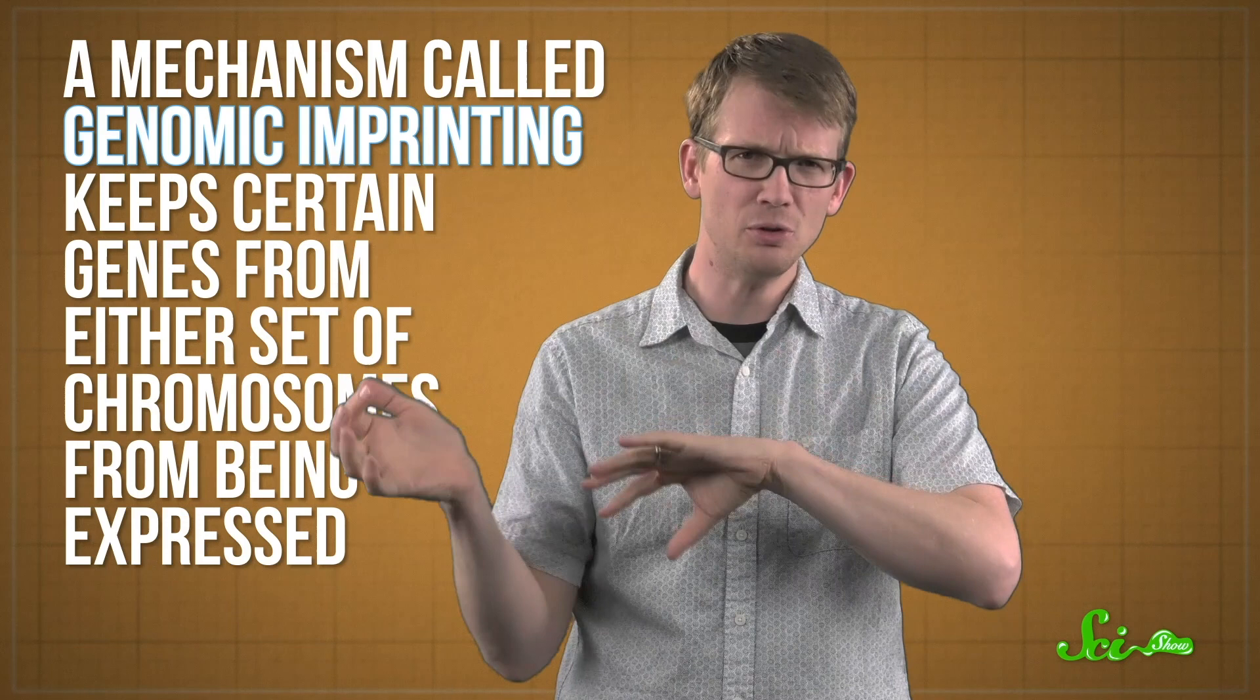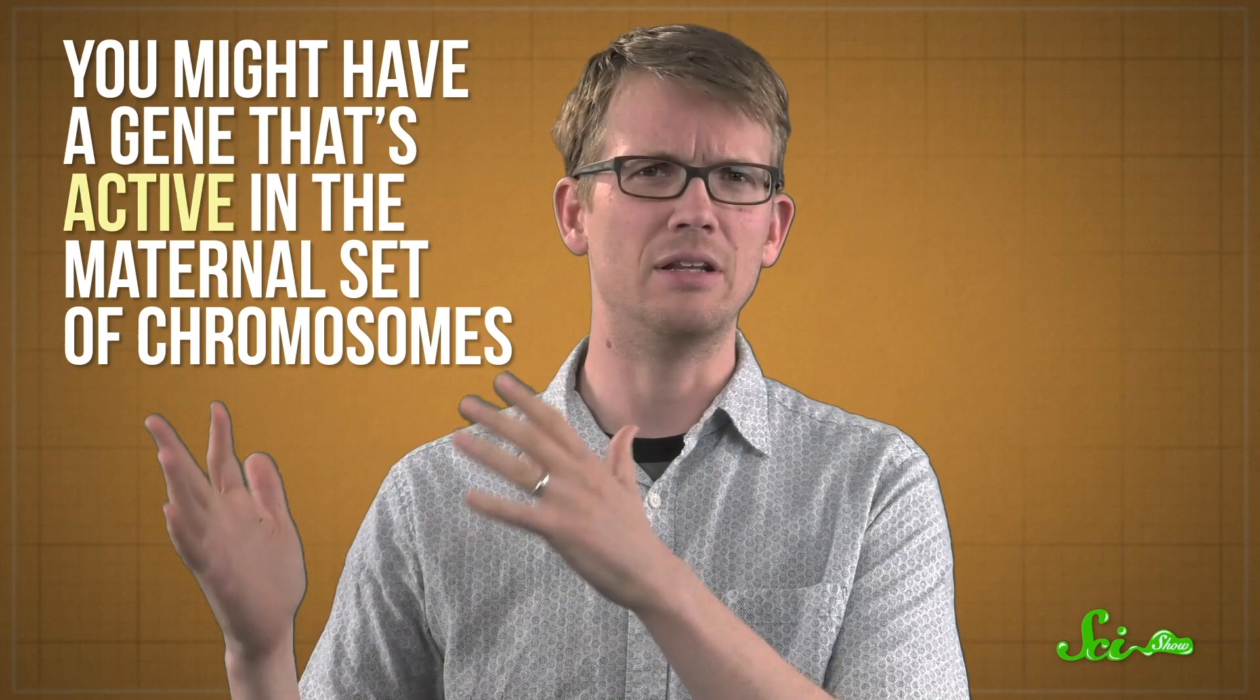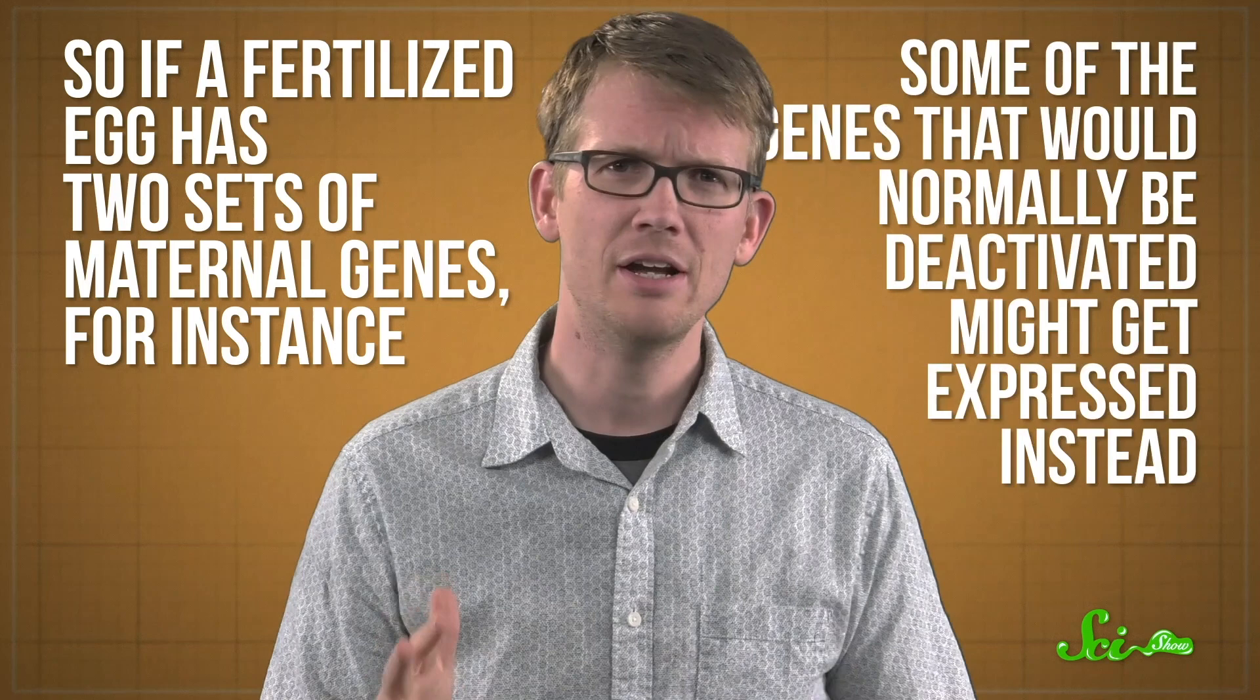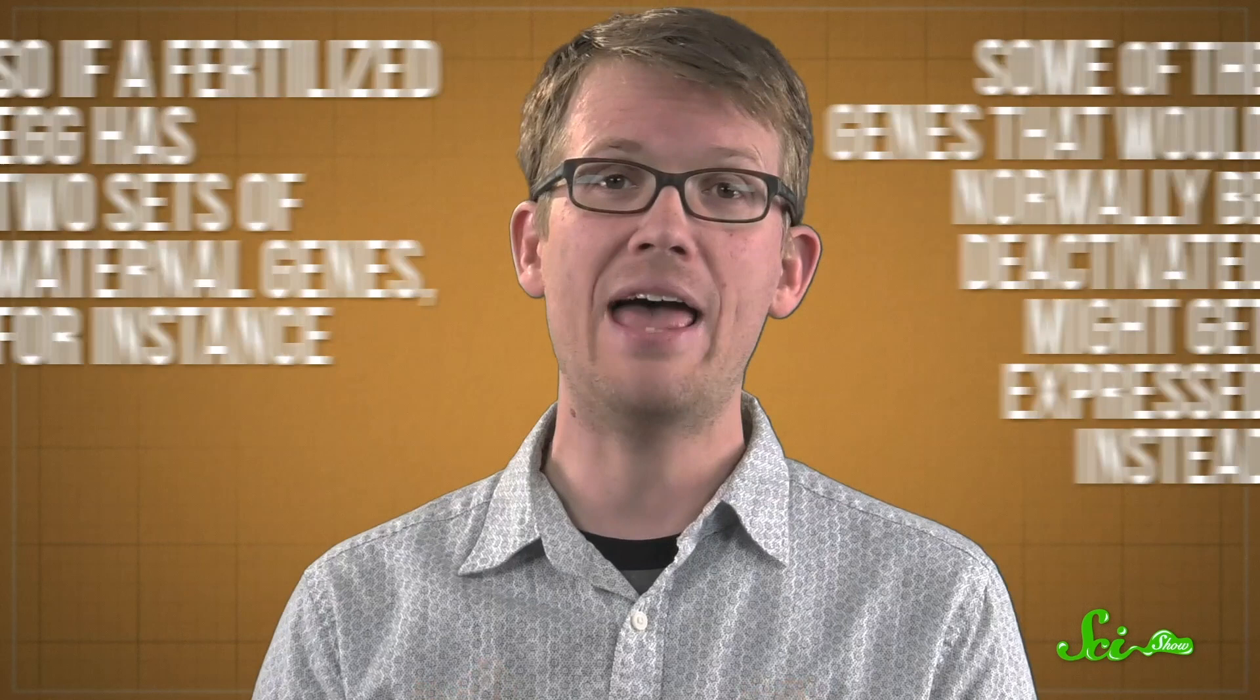Now, one of the big challenges with engineering offspring this way is their long-term health and survival. In traditional sexual reproduction in mammals, a mechanism called genomic imprinting keeps certain genes from either set of chromosomes from being expressed. Like, you might have a gene that's active in the maternal set of chromosomes that gets deactivated in the paternal set of chromosomes. Researchers don't totally understand the ins and outs of genomic imprinting, but we know it's really important for normal development. So if a fertilized egg has two sets of maternal genes, for instance, some of the genes that would normally be deactivated might get expressed instead. And that's bad news. The embryo might develop abnormally or stop growing completely.